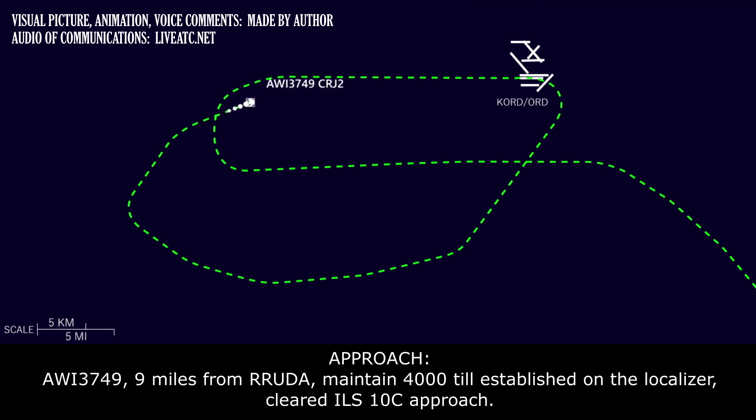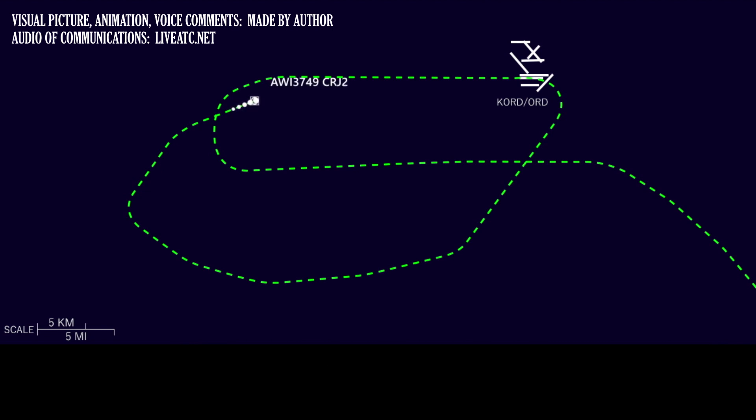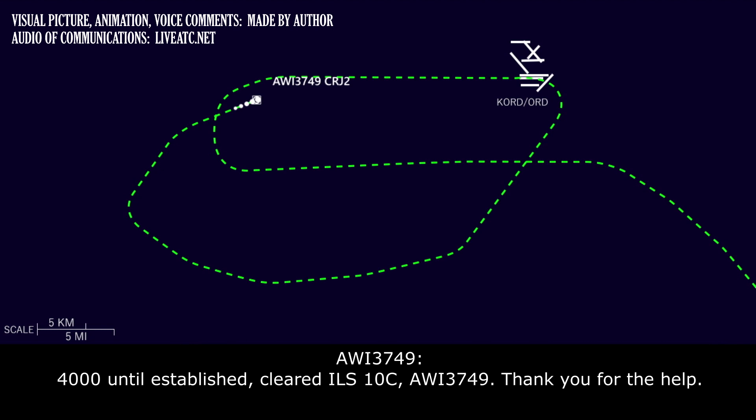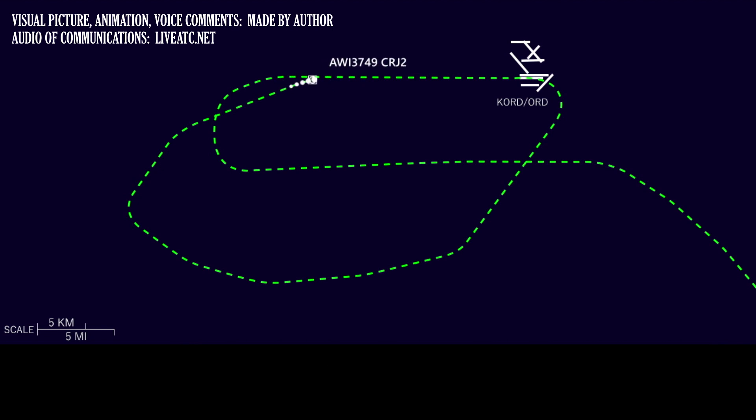Established on the localizer, cleared ILS 1-0 center approach. 4000 until established, cleared ILS 1-0 center, Wisconsin 3749, thanks for the help. You're welcome. Wisconsin 3749, tower on 120.75.